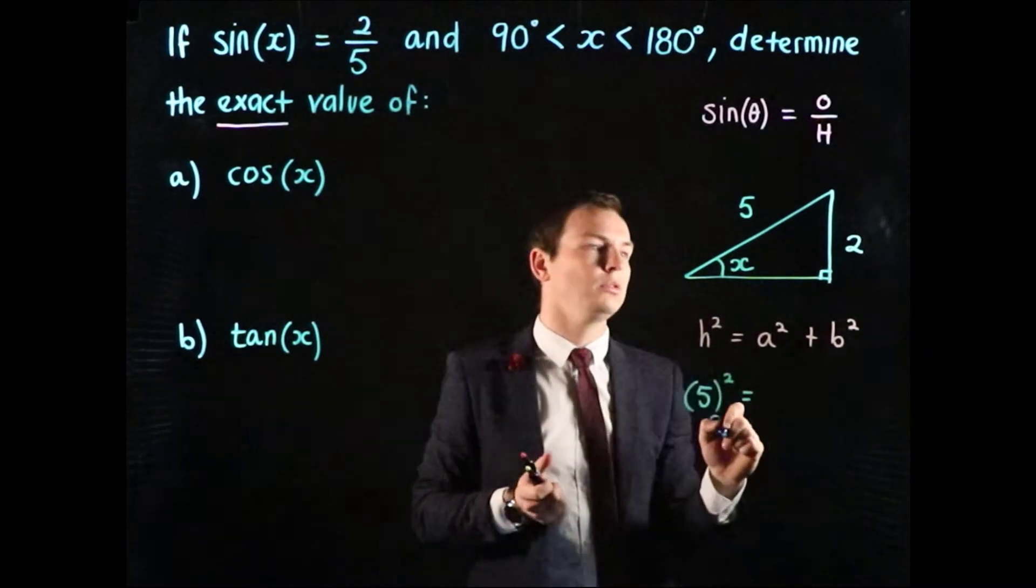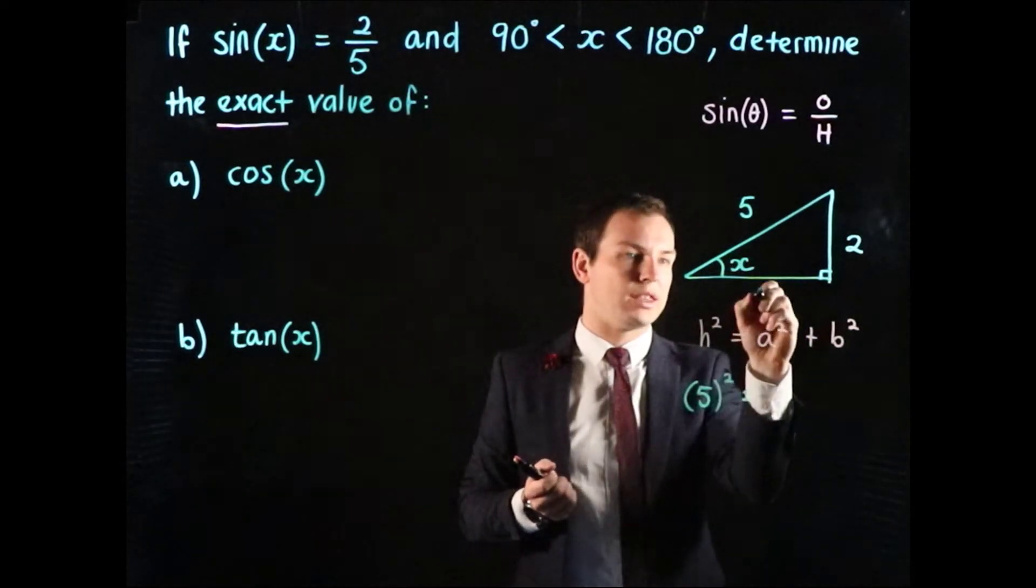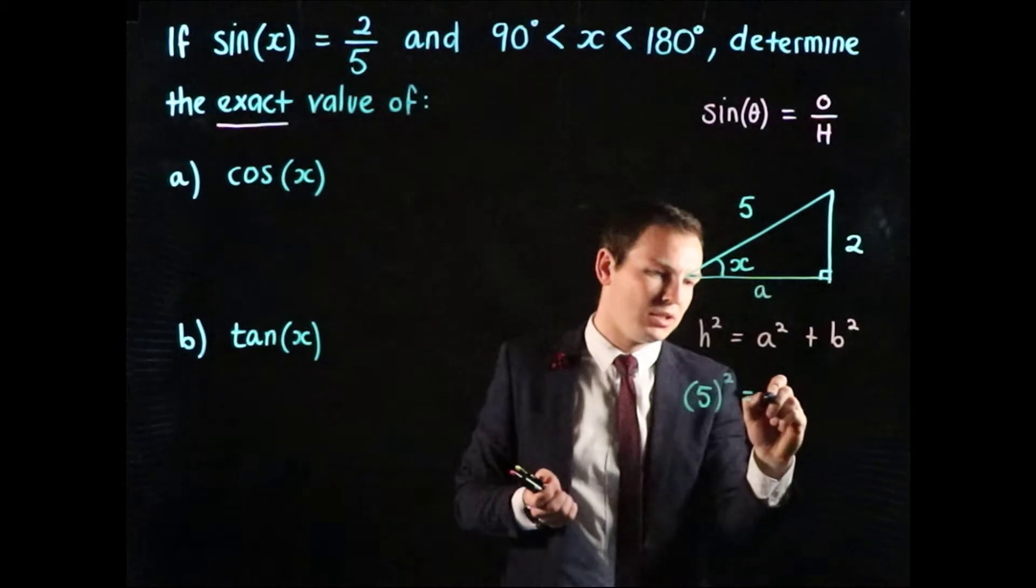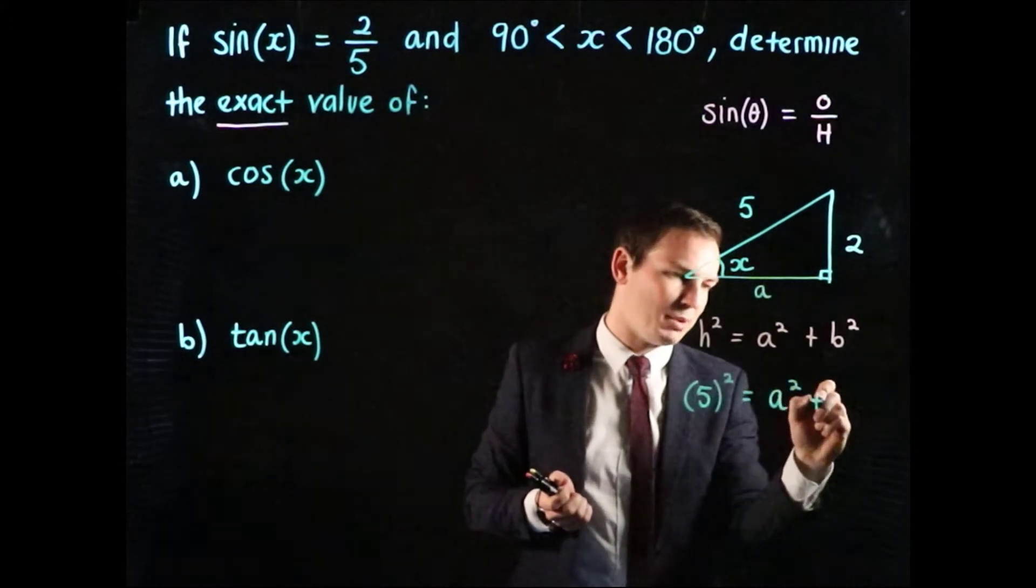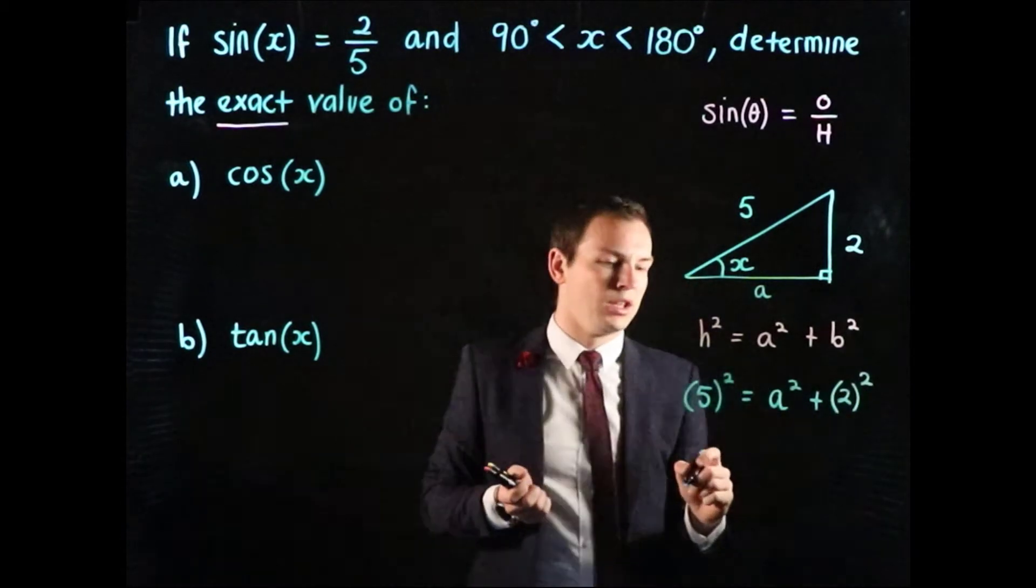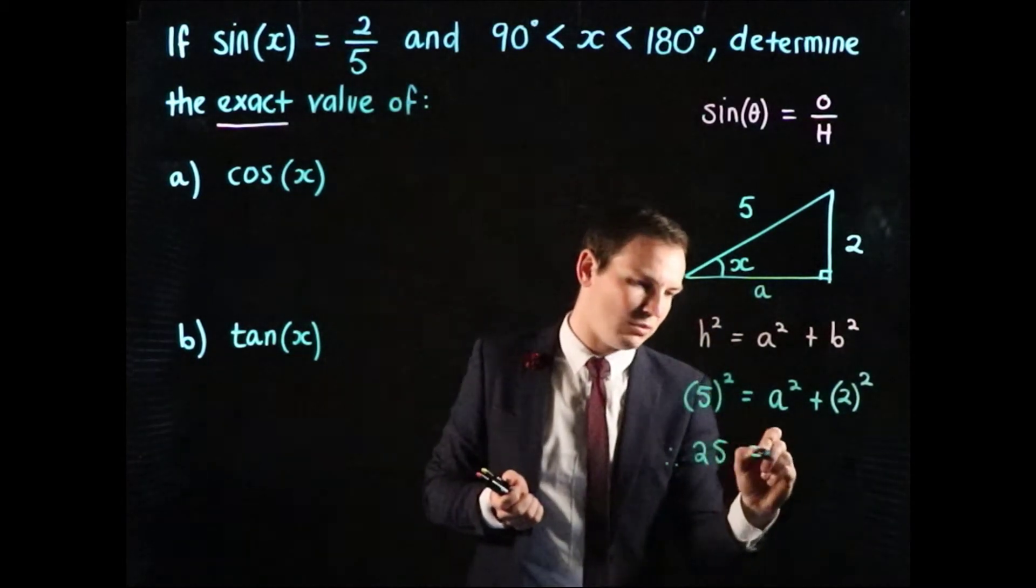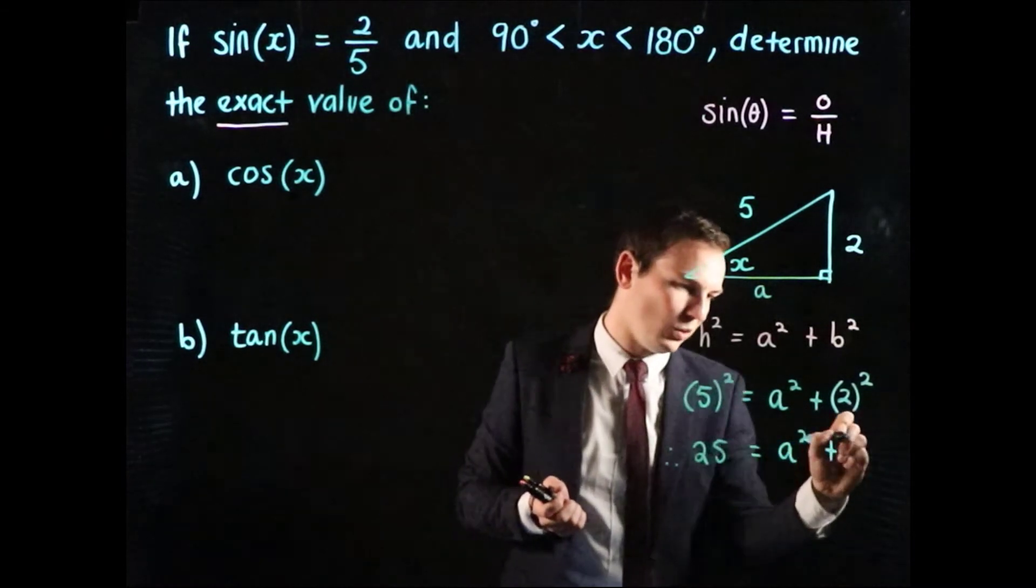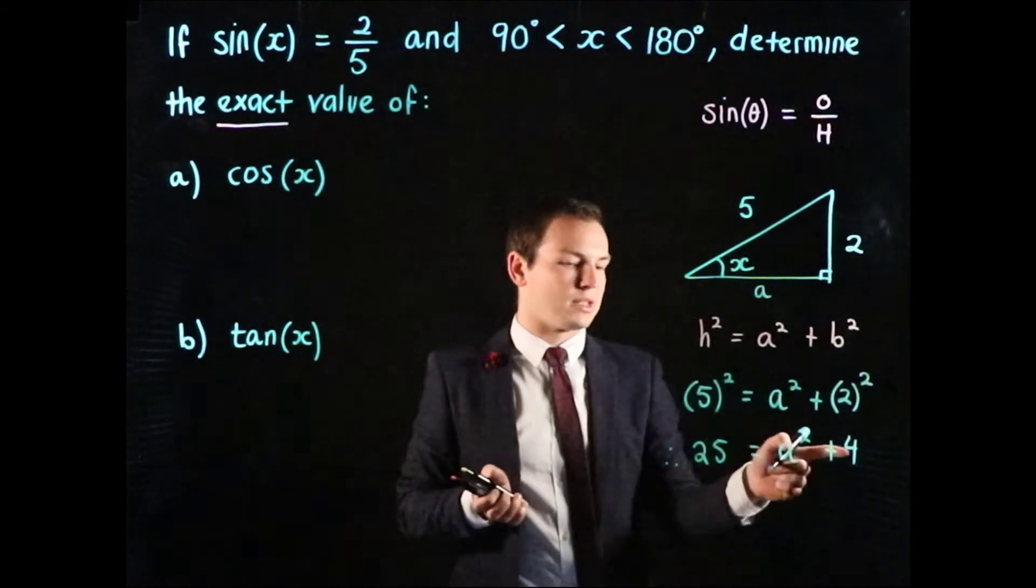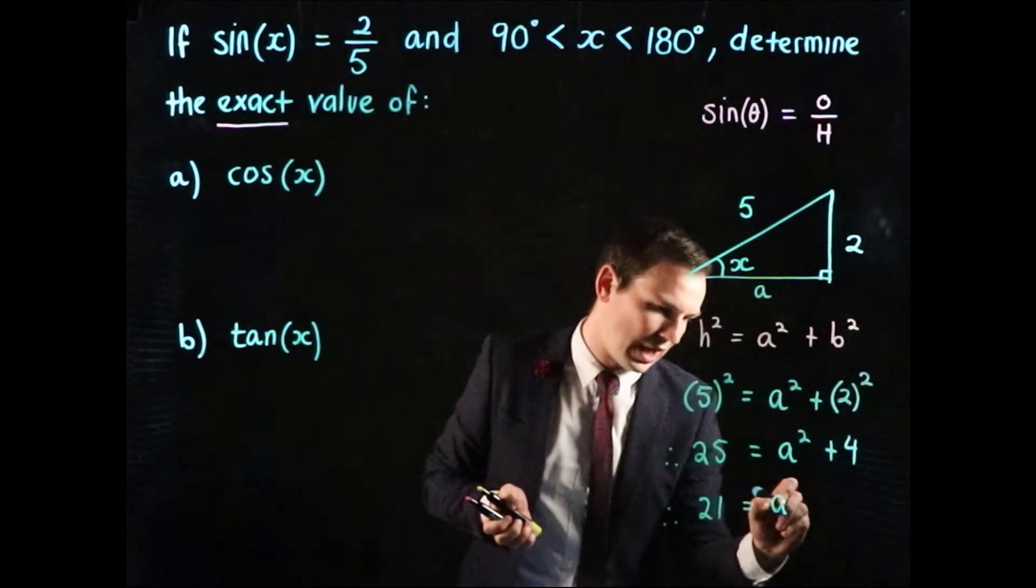We could say that this length here is a for the moment. So we have a squared plus b squared, but b squared is 2 squared. This gives us 25 equals a squared plus 4. Then we subtract 4 and find that 21 equals a squared.